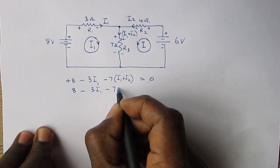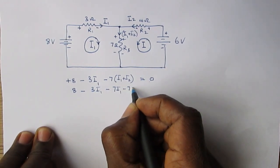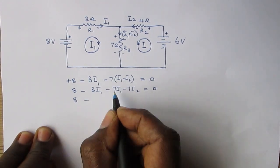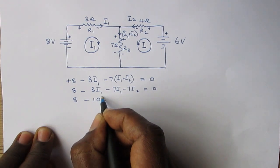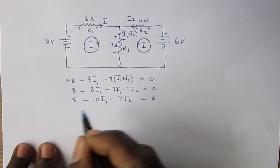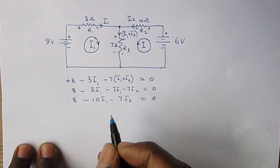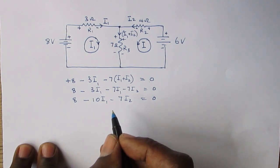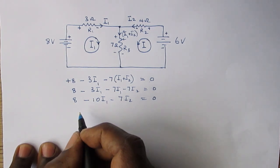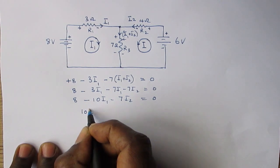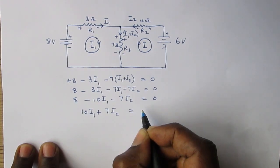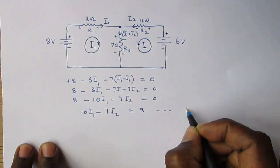So we have 8 minus 3I1 minus 7I1 minus 7I2 equals zero, which gives us 8 minus 10I1 minus 7I2 equals zero. Putting the I1 and I2 on one side, we get 10I1 plus 7I2 equals 8. That gives us equation 1.